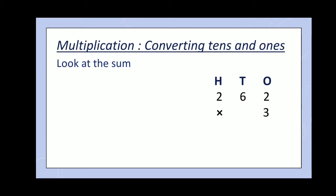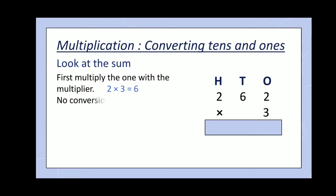Look at the sum. First multiply the ones column with the multiplier that is 2. 2 multiplied by 3 is equal to 6. Then, next multiply the tens column with the multiplier like 6 multiplied by 3 is equal to 18. So it means there are too many tens.